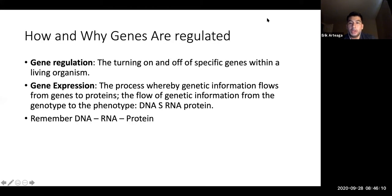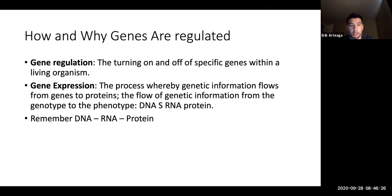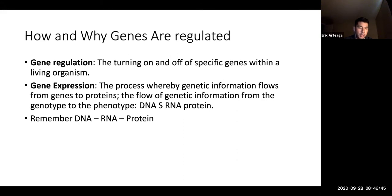Gene regulation is the turning on or off of specific genes within a living organism. Gene expression is the process whereby genetic information flows from gene to protein — DNA to RNA to protein — the central dogma. This is now about the why: even though all our cells contain the same genetic information, gene regulation allows different cell types to form and function differently.